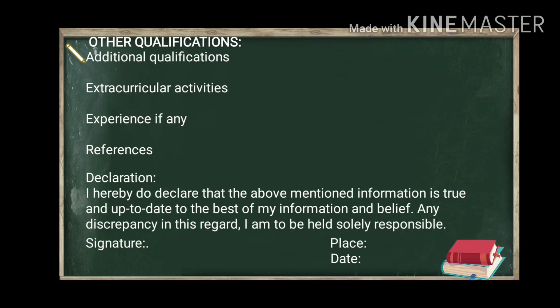Now the third part of the CV covers additional qualifications and skills. If you have a diploma in any other field, that should be mentioned. Extracurricular activities that show you in a good light and make a positive impact on your employer should also be listed. If you have experience, mention it; if not, simply write 'fresher' — don't write 'zero years of experience.'